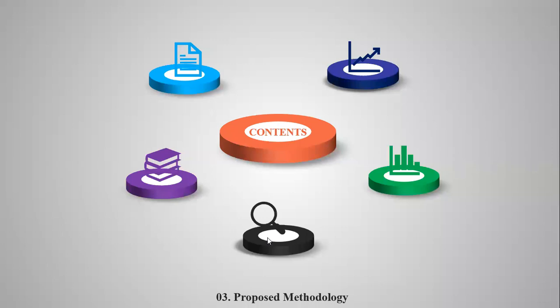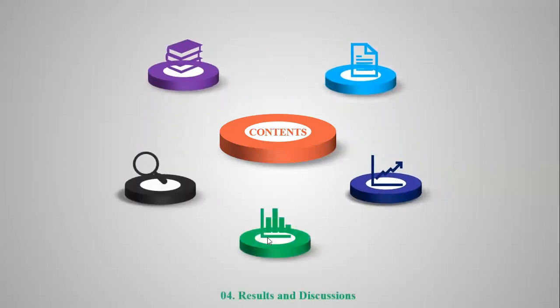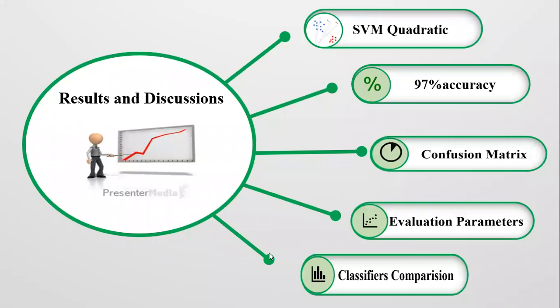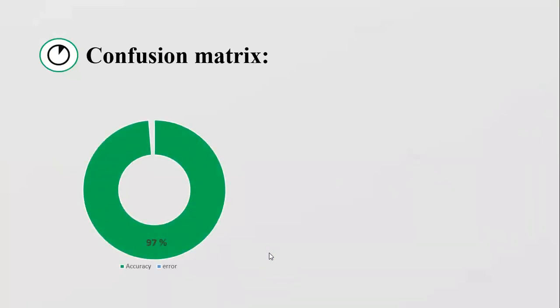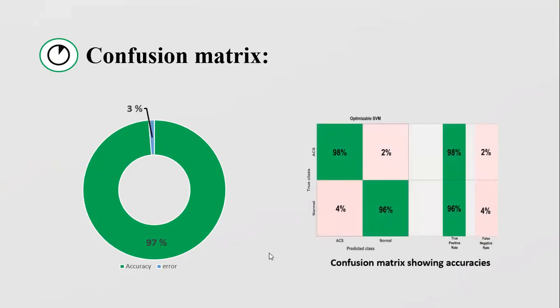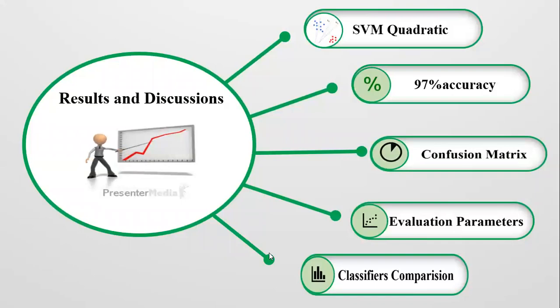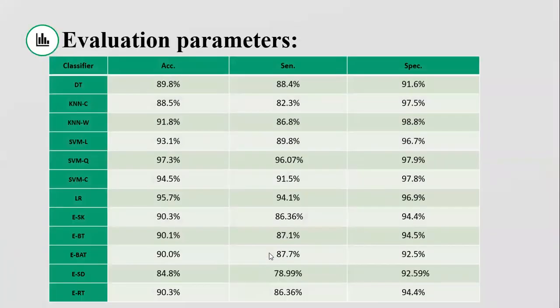Now let's see the results that we have attained during this study. We have achieved the highest accuracy of 97% using 10-fold cross-validation and SVM quadratic. The confusion matrix shows that the accuracy of 97% is obtained with an error rate of 3%. It also shows the sensitivity of 96% and specificity of 98%. This table shows the complete performance and evaluation of different classifiers in terms of accuracy, sensitivity, and specificity.